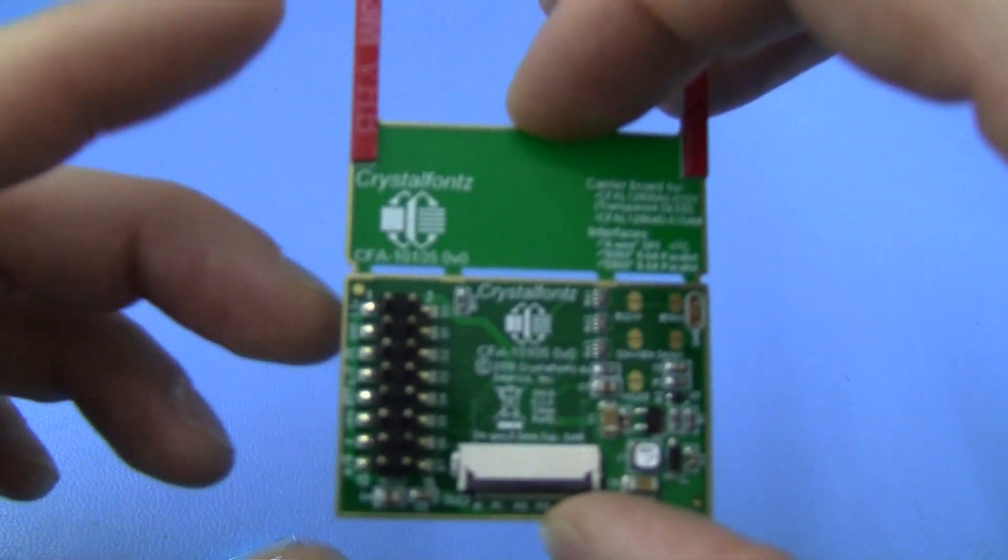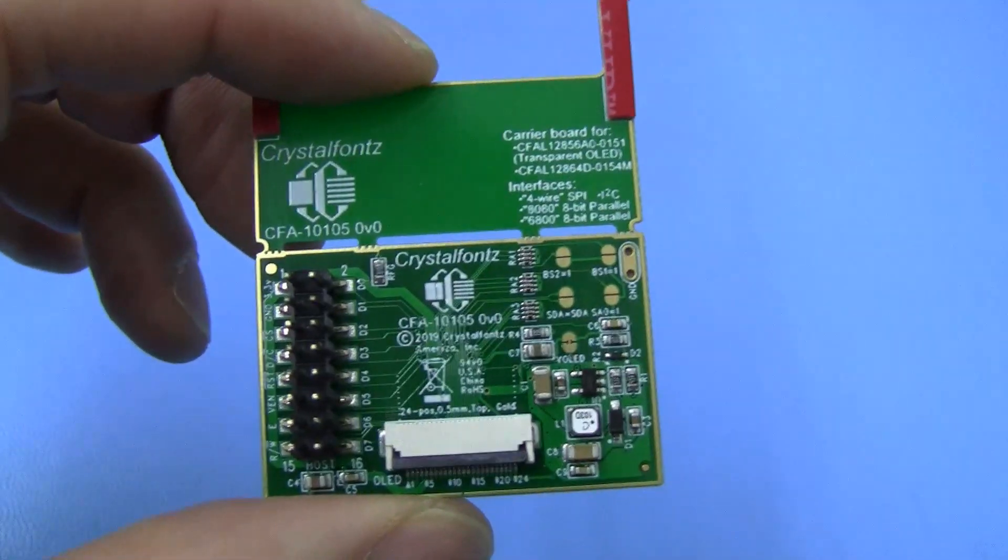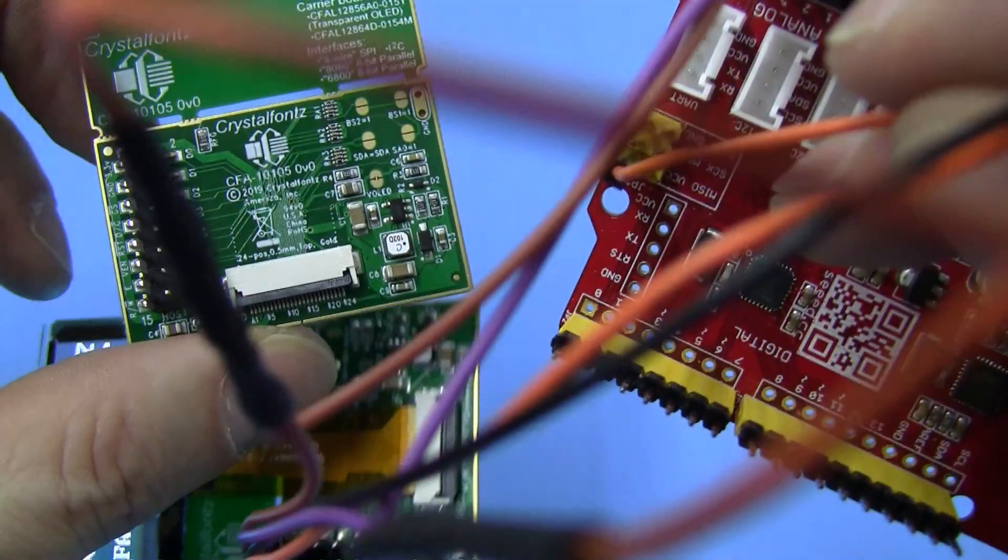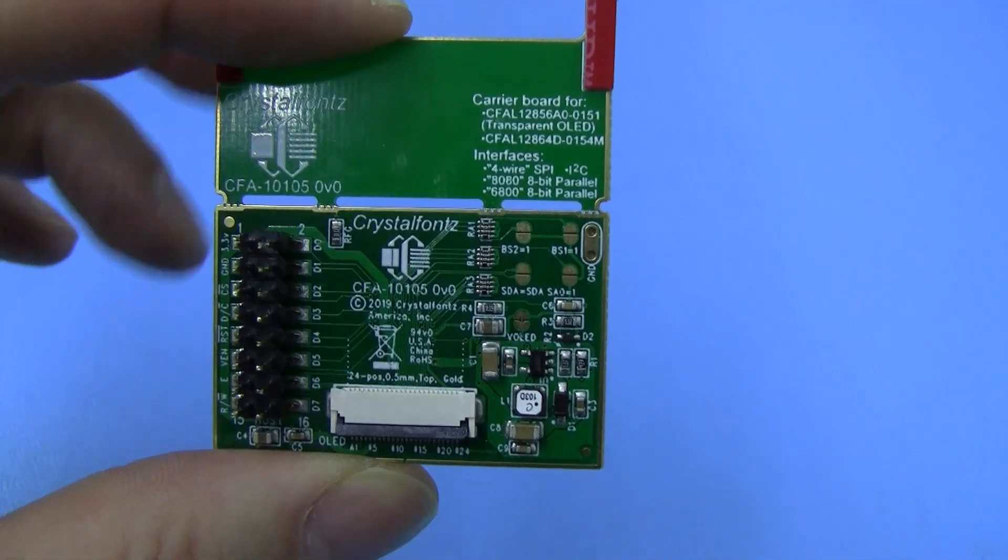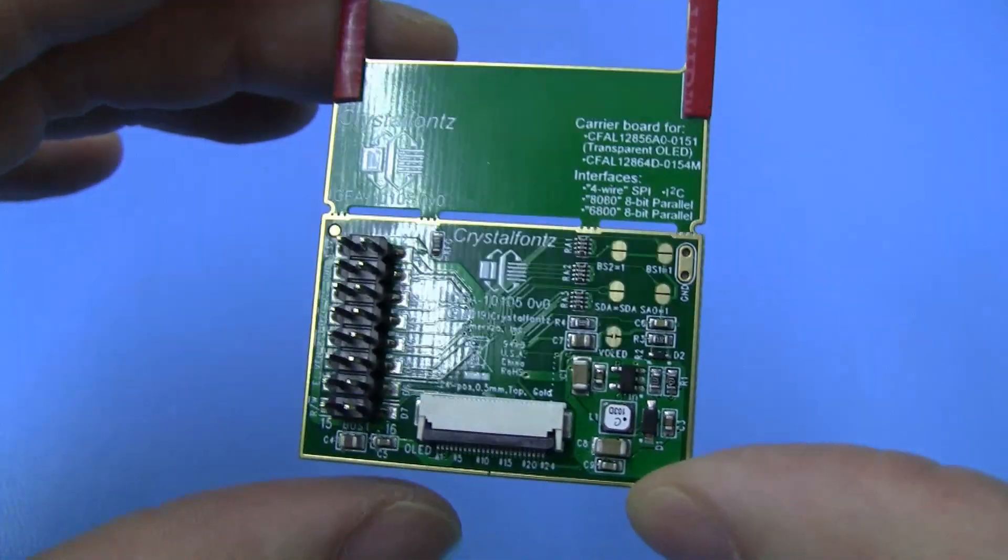Another key feature of this breakout board is it supplies the boost circuit so you only have to supply the 3.3 volts from the Arduino to the breakout board to get your display running. So you don't need a secondary source for 12 volts.